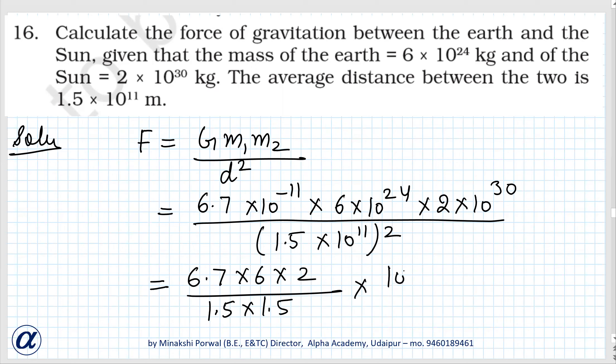And here we will write all the powers of 10, that is 10⁻¹¹ × 10²⁴ × 10³⁰. This is 1.5 / 10¹¹ × 10¹¹.